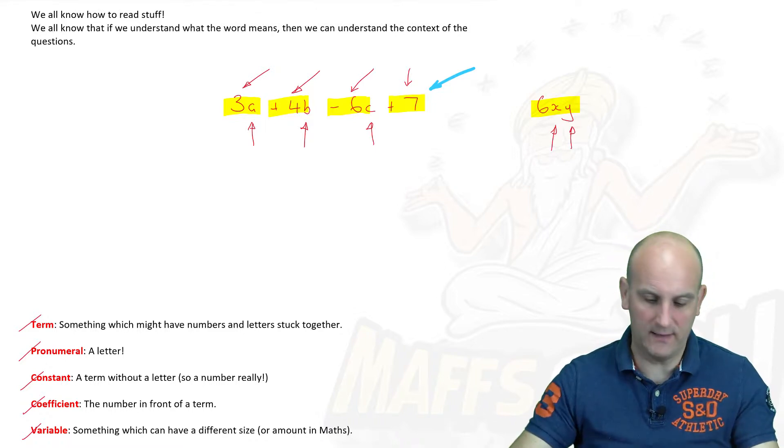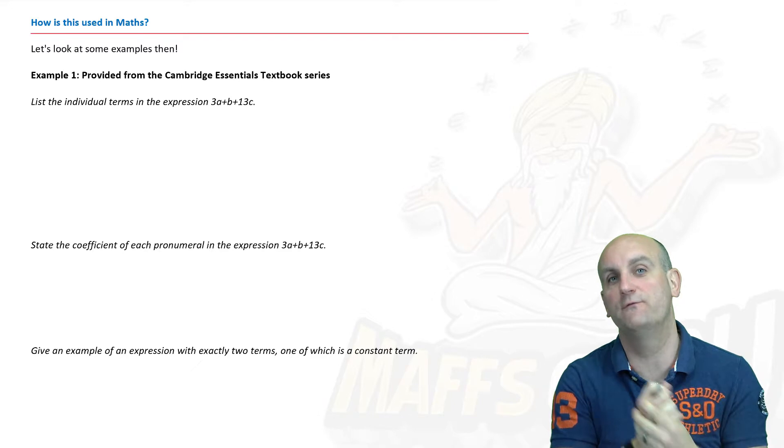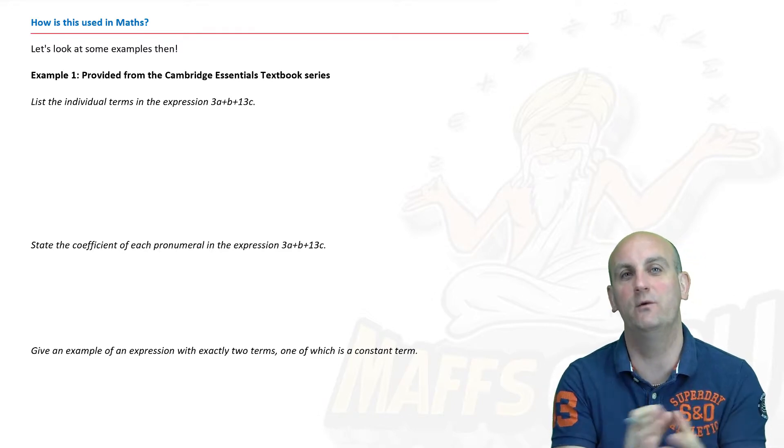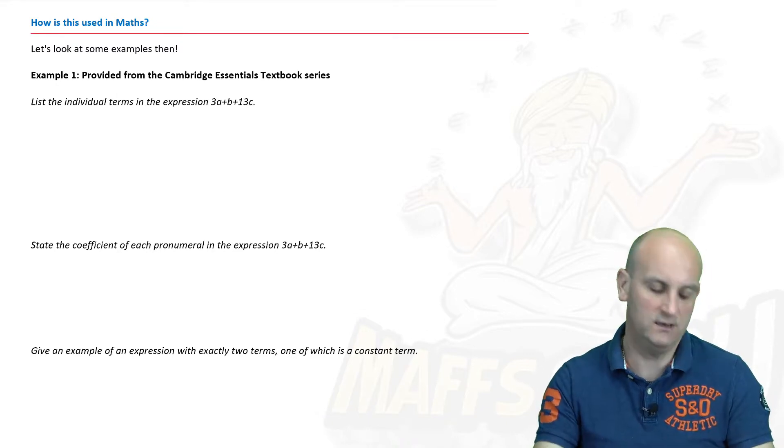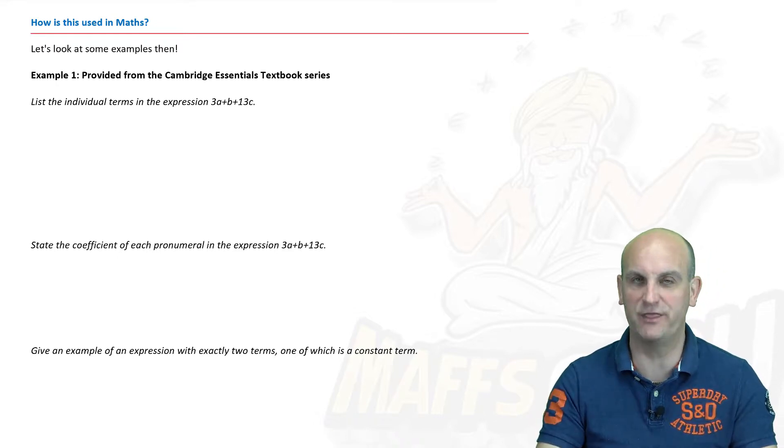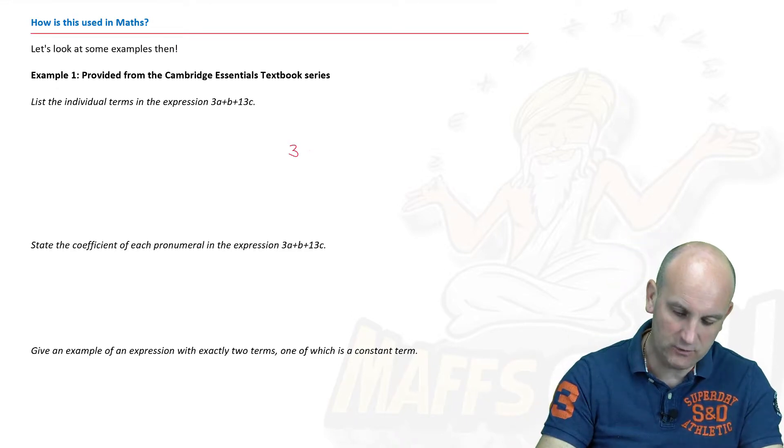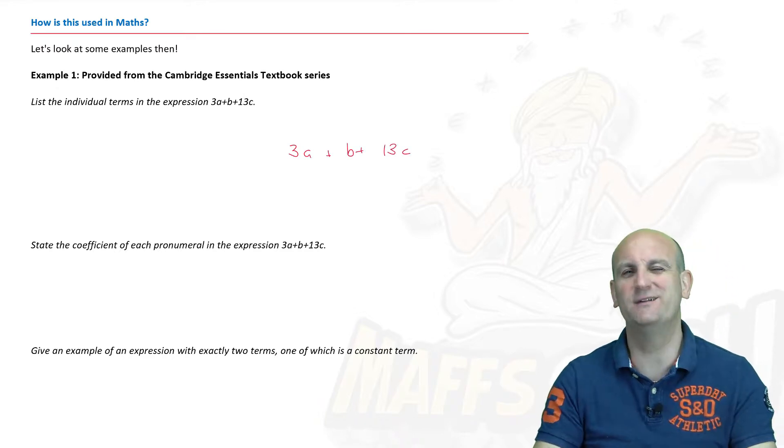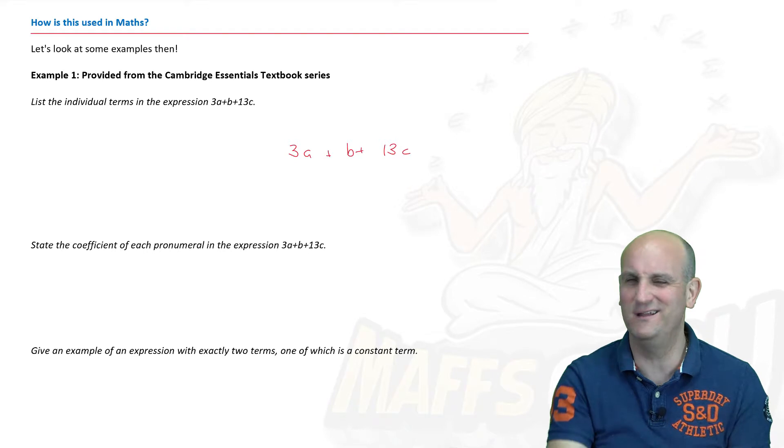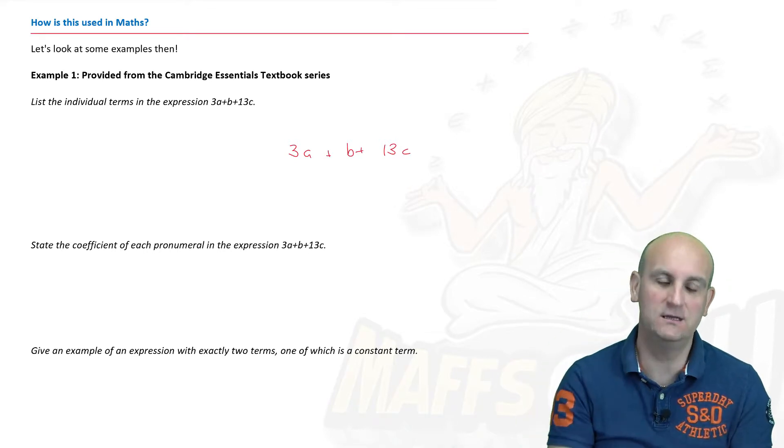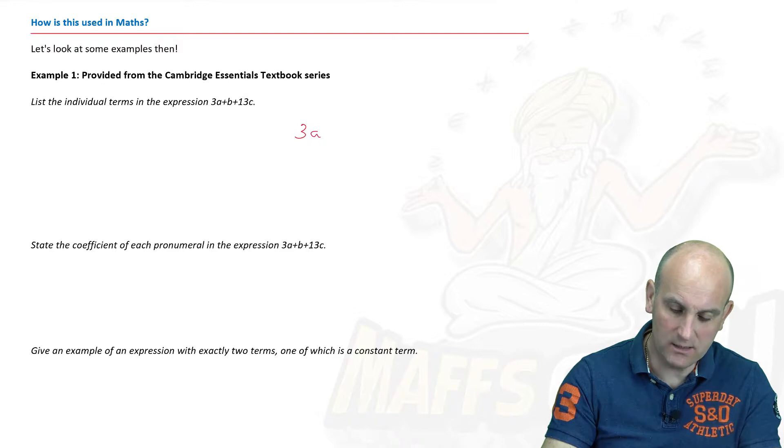Those are those five really important things we started at the start of the lesson. We're going to use that stuff throughout now. One of my examples are taken from the Cambridge Essentials textbook series. Example one says, list the individual terms in the expression 3A plus B plus 13C. I've seen so many kids go, that must be 3A plus B plus 13C. And at which point I go, no. When you go shopping and you make a list, do you write it long ways or across the screen? When I write a list, I write it going down. And that's exactly what the question is asking you to do.